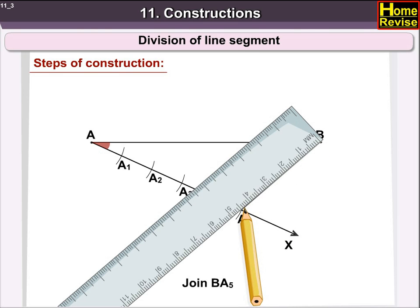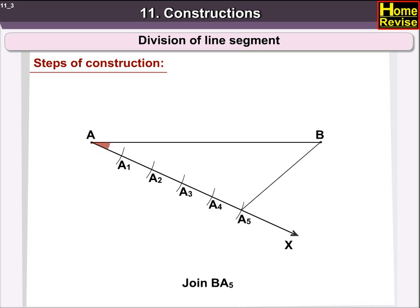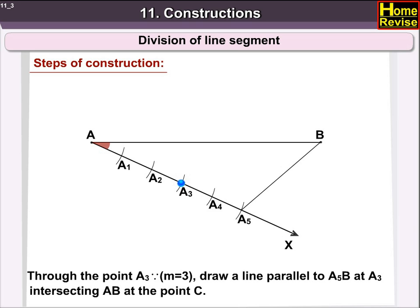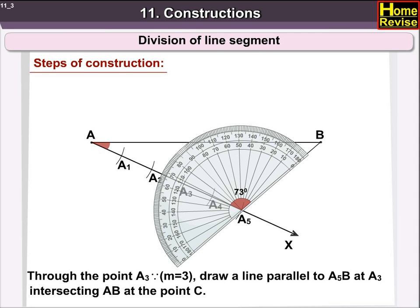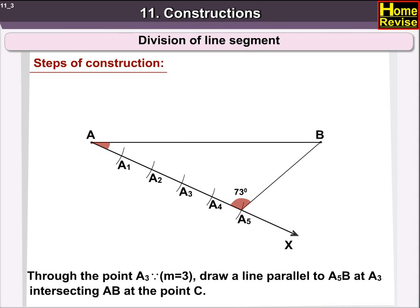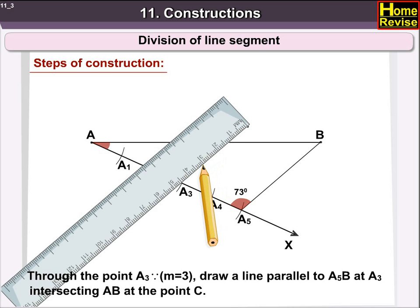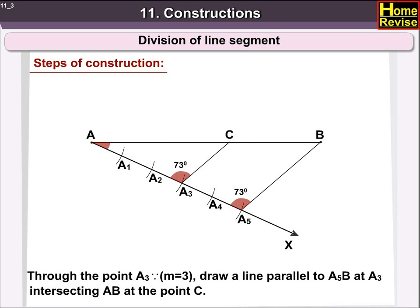Join BA5. Now, through the point A3, since M is equal to 3, draw a line parallel to A5B at A3, intersecting AB at the point C.